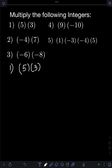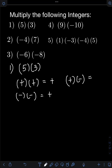So if we are multiplying like signs — that is, if we have positive times positive, the answer should be positive. Also, if we have both negative, so negative times negative, the answer is also positive. For unlike signs, that is if we have positive times negative, the answer is negative. Or if we have negative times positive, the answer is also negative. So in multiplying integers, we simply multiply first the absolute value of the numbers disregarding the sign, and then follow this rule for the signs of the final answer.